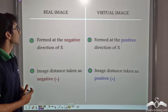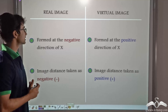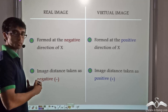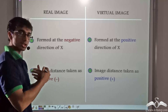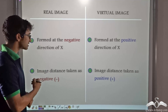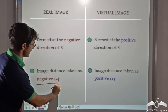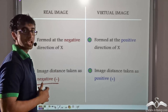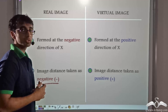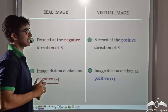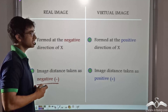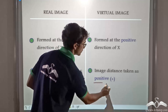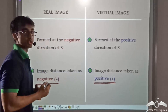Now let us consider in case of a real image — the image is formed on the negative side of x, that is on the left side of the origin, so the image distance is taken as negative. And in case of a virtual image, a virtual image is always formed on the positive side of x, that is on the right of the origin, so the image distance for a virtual image is always taken as positive.